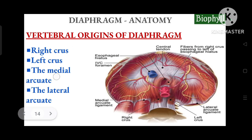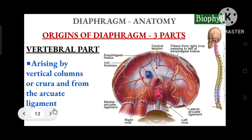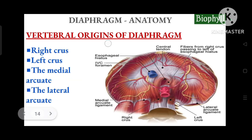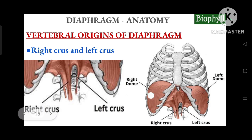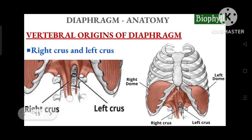The diaphragm has a right dome and a left dome — it is dome-shaped like a parachute. Correspondingly, there is a right crus and a left crus. The crura are the plural of crus. So we have two crura — the right crus on the right side and the left crus on the left side.